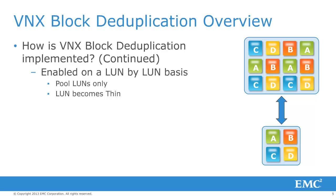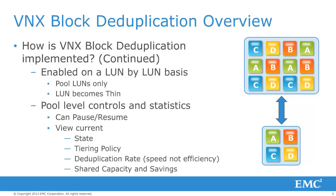VNX block deduplication is enabled on a LUN by LUN basis. Deduplication can only be enabled on pool LUNs, and the LUNs become thin when deduplication is enabled. On each pool, the user may pause or resume data deduplication. The user can also view the current state, view or update the tiering policy and deduplication rate, or view the current shared capacity and deduplication savings.